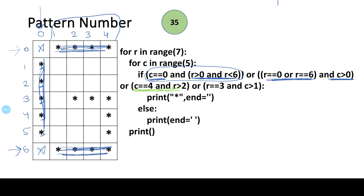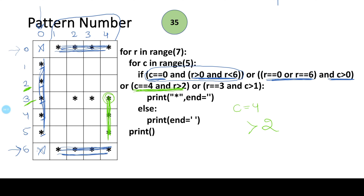The next portion takes care of the right-side stars. When column is equal to 4, I need stars, but only when the value of row is greater than 2. The row numbers 3, 4, and 5 are all greater than 2 so stars appear there. You can also add a condition that it should be greater than 2 and less than 6 to avoid overwriting.